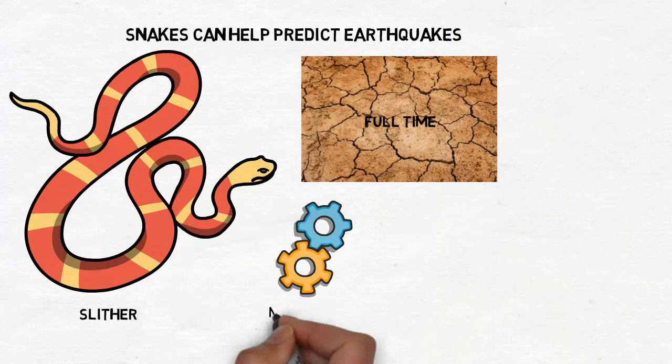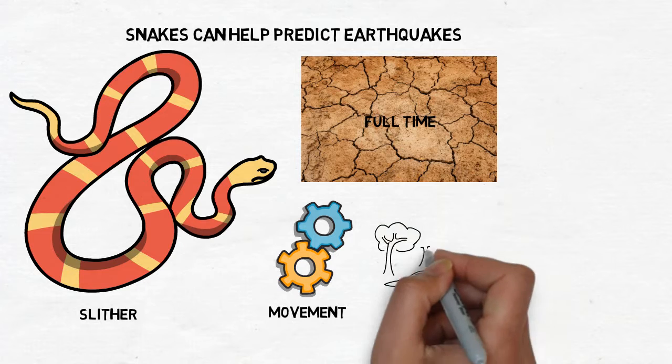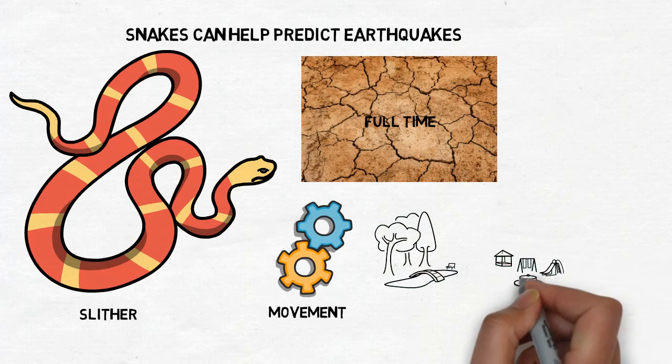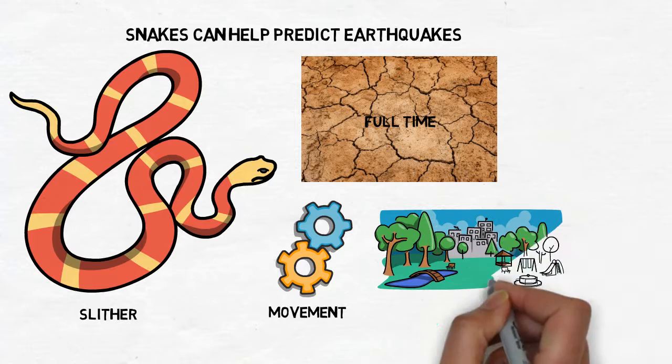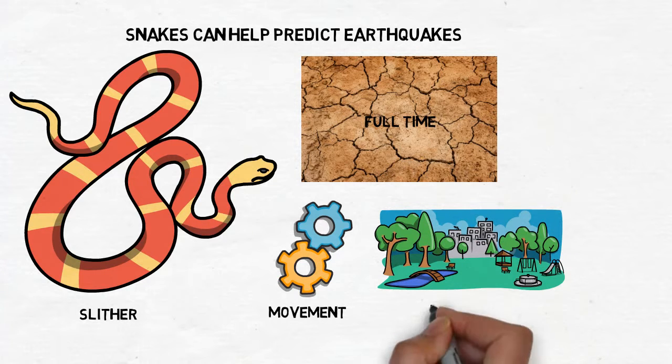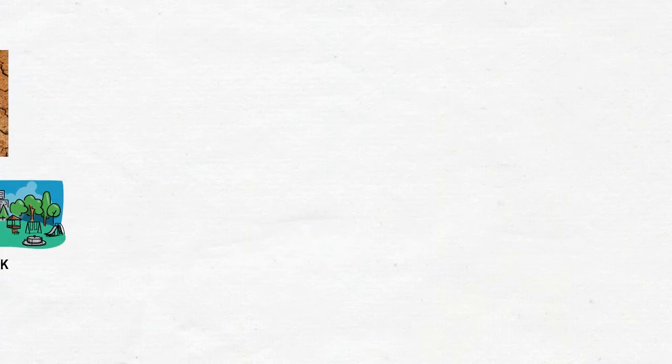So if there's an earthquake, the snake can probably go weird and the scientists will probably know what happened. And they're probably kept in a scientist's lab park or something like that to help the scientists if suddenly there's an earthquake.